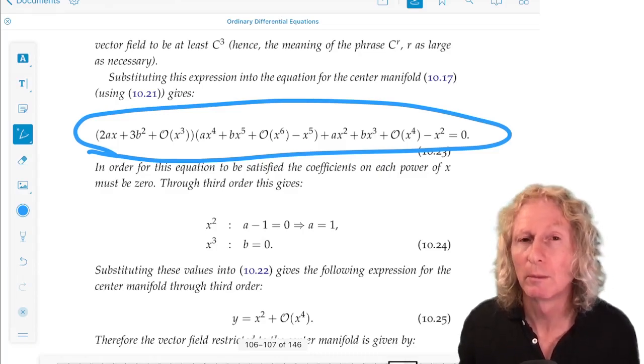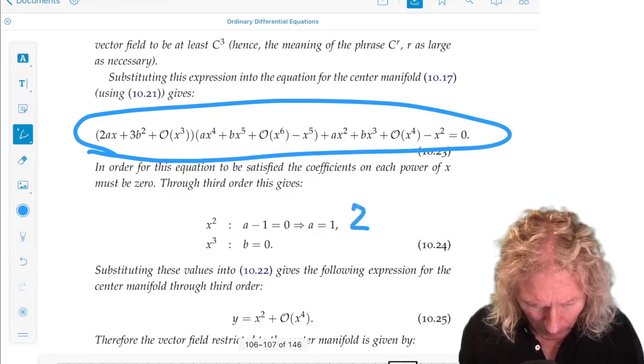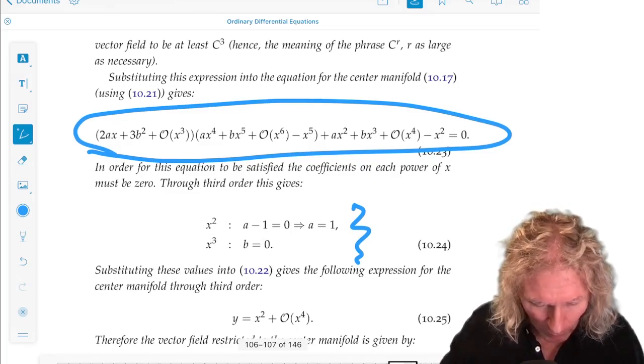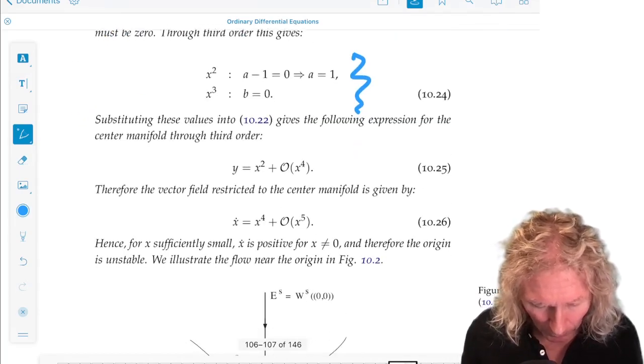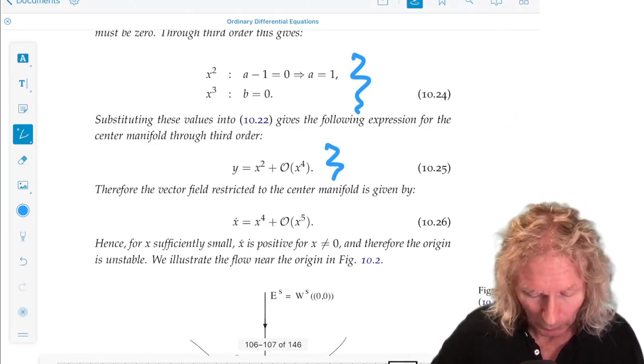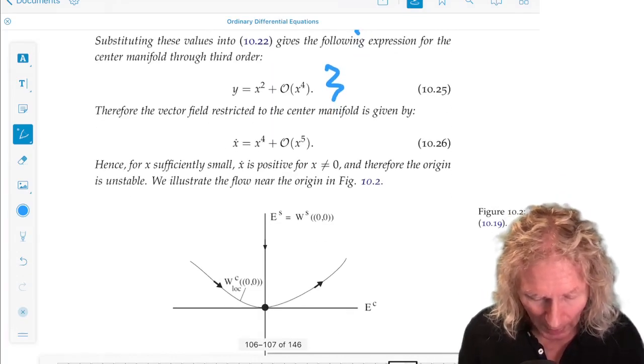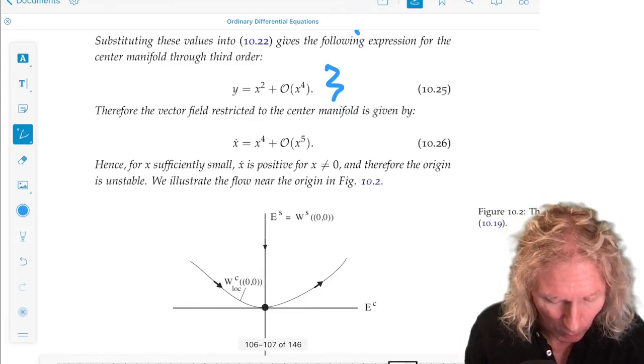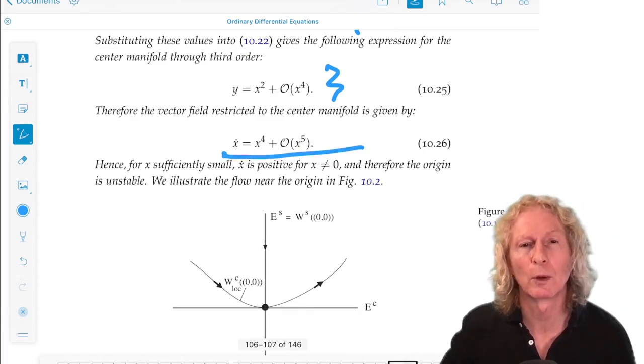So, solving for those on the quadratic and cubic, I can easily find that a is 1 and b is 0. So that gives me a center manifold having this form. If I substitute that into the equations, I'm just leaving x, not putting in the u right now.